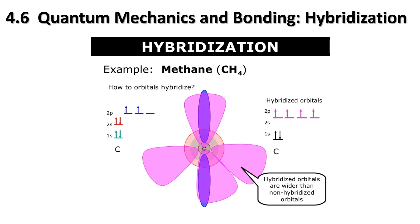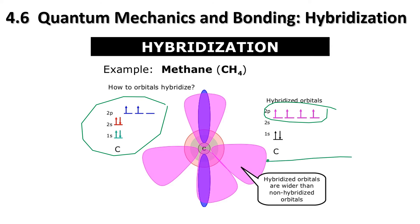This is essentially what we just explained: starting configuration and then the hybridized orbital with energy level raised. There's also mention that hybridized orbitals are wider than non-hybridized orbitals - they are a little bit bigger. That's why the shape of methane has been experimentally measured and verified.